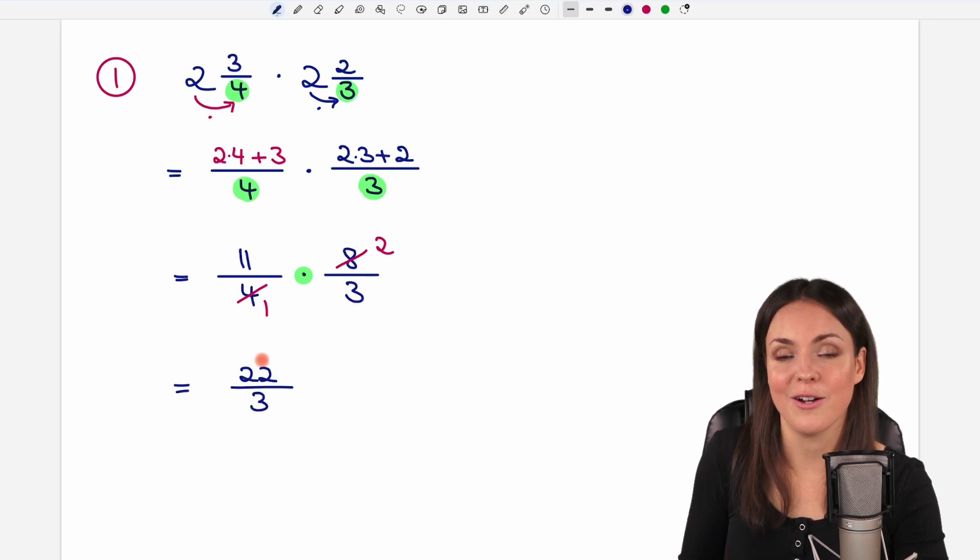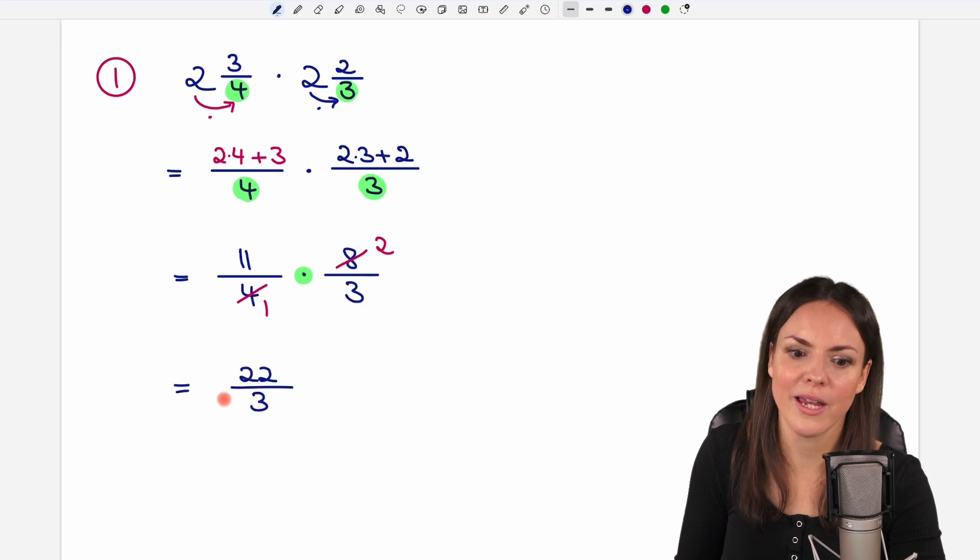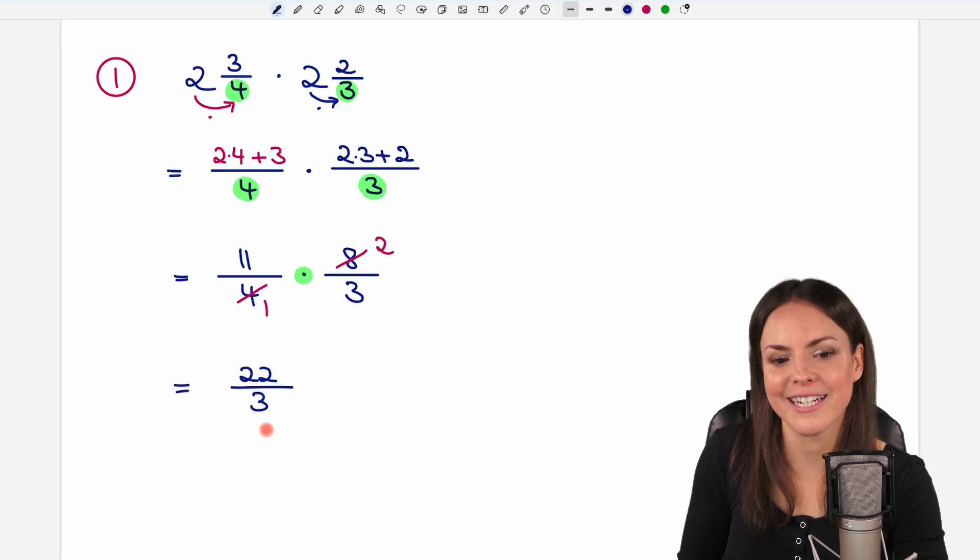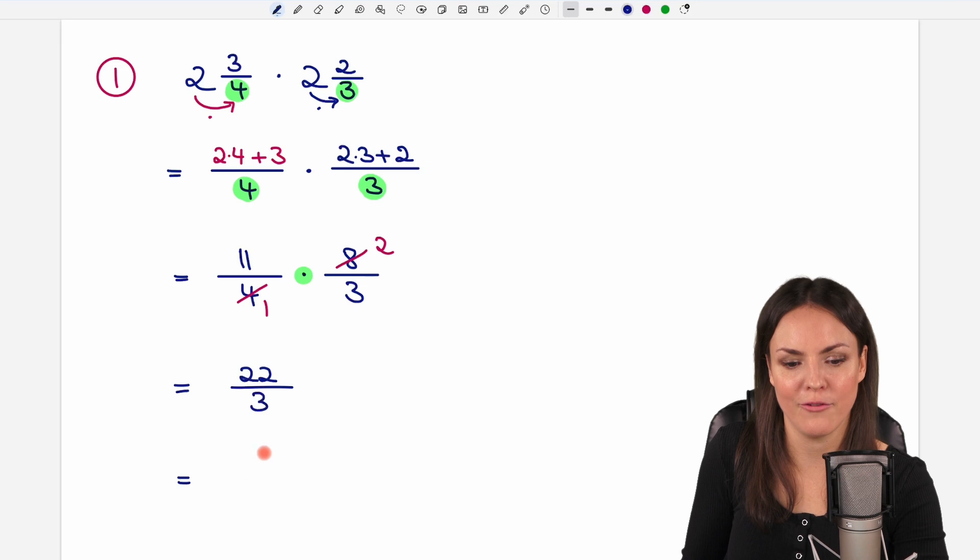This is our result now, but since we're working with mixed fractions here, we should take a look if we can convert this fraction into a mixed fraction again. We can do that, because the number on the top is larger than the number on the bottom. So, this is an improper fraction, and every time we have such a thing, we can convert it into a mixed fraction.